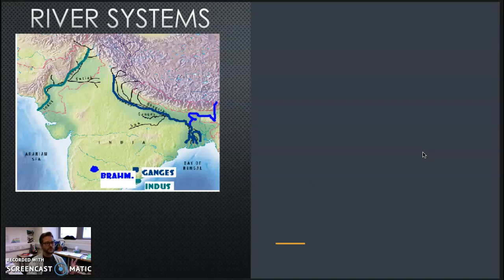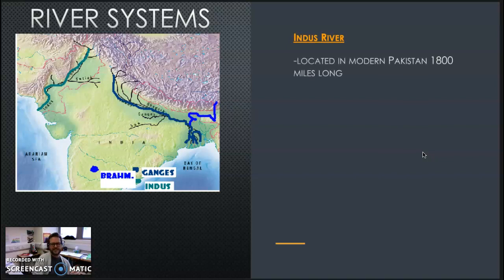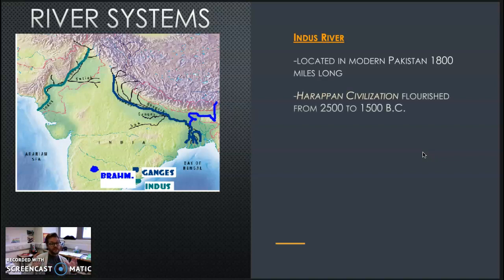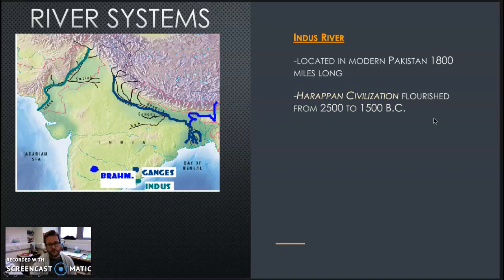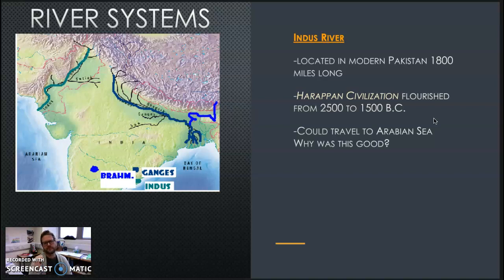So, some of the major river systems — there are two major river systems. While there are a number of rivers in India, we're going to look at two right now. One: the Indus River, located in modern Pakistan. It's about 1,800 miles long. Some of the earliest civilizations in all of history can be found around this. The Harappan civilization flourished from 2500 to 1500 BC. One thing that's super important about the Harappan civilization — we're going to be very grateful for the ones who gave us the first indoor plumbing. Yeah, that's right. First indoor toilets. Thank you, early Indus Valley civilizations.